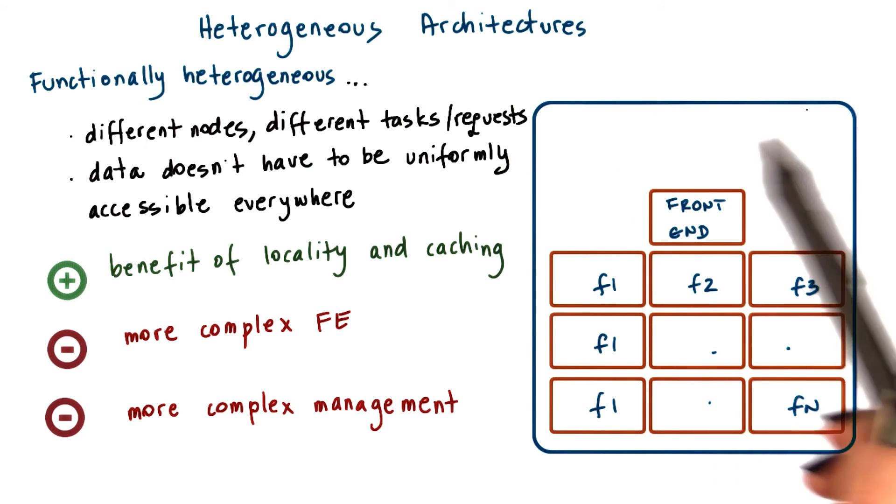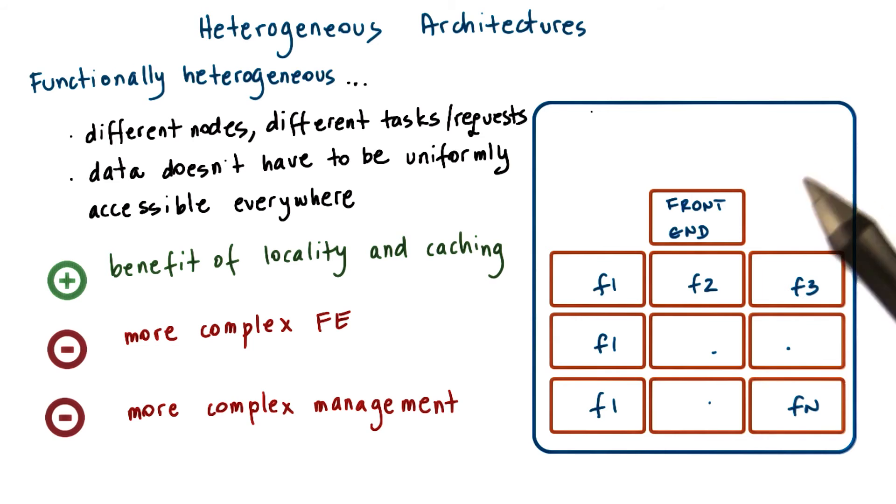Also, even if something changes in the workload pattern and all of a sudden there are more requests of a certain kind, then we have to reconfigure. We can't just redirect those excess requests to some of the other nodes if they're not capable of processing those kinds of actions or serving that kind of data, even if those nodes are otherwise idling.